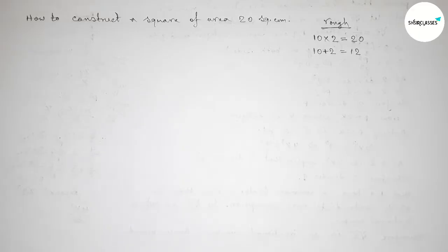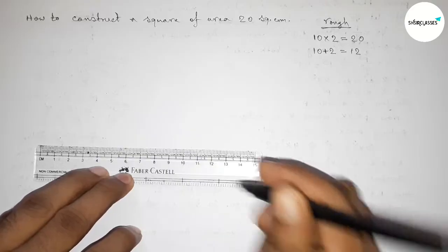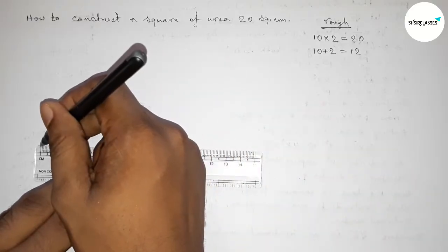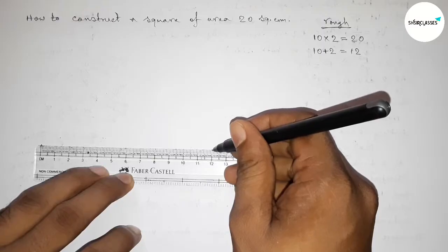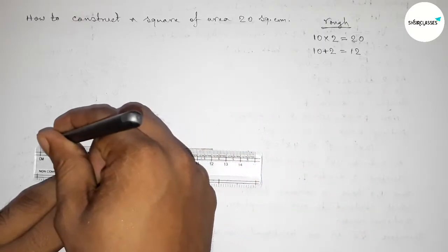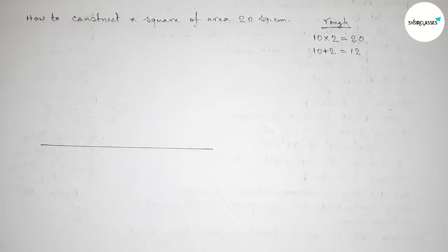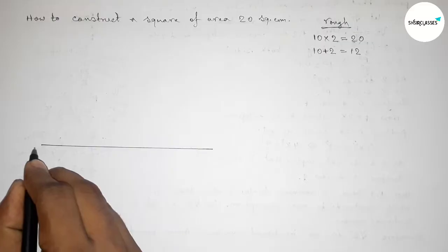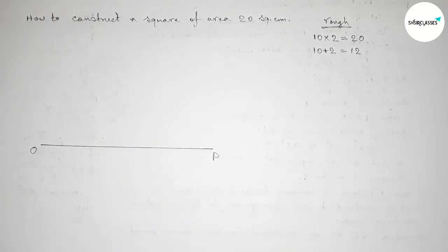You can draw this in another way, but I'm taking this process. Drawing here a line of length 12 centimeters. This is the 12 centimeter line, taking point O here and point P here, so OP equals 12 centimeters.